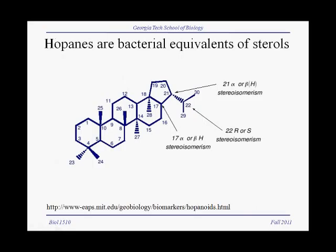Bacteria also have lipids special to them, called hopanes — the bacterial equivalent of sterols. Unlike sterols, which have four rings, hopanes have five rings, and no oxygen is required for their synthesis. Hopanes are thought to serve a similar function to sterols in strengthening the membrane and controlling membrane permeability. They are so abundant in petrochemical deposits that some consider them the most abundant biological molecules on Earth.